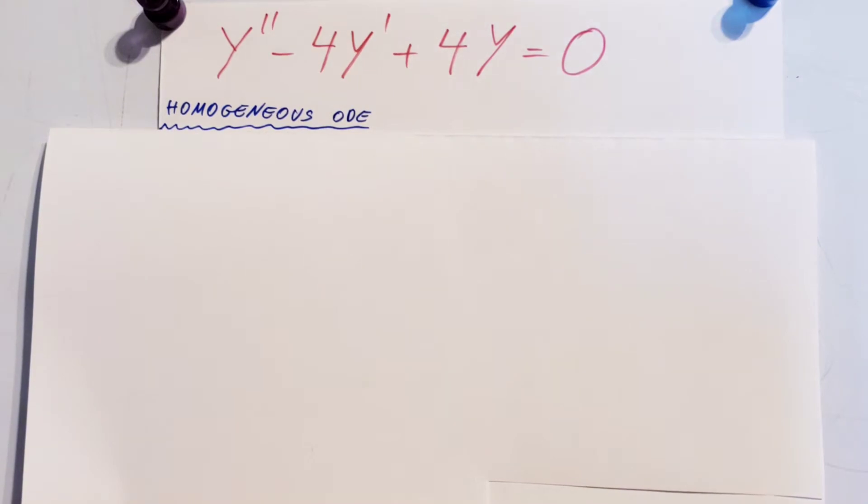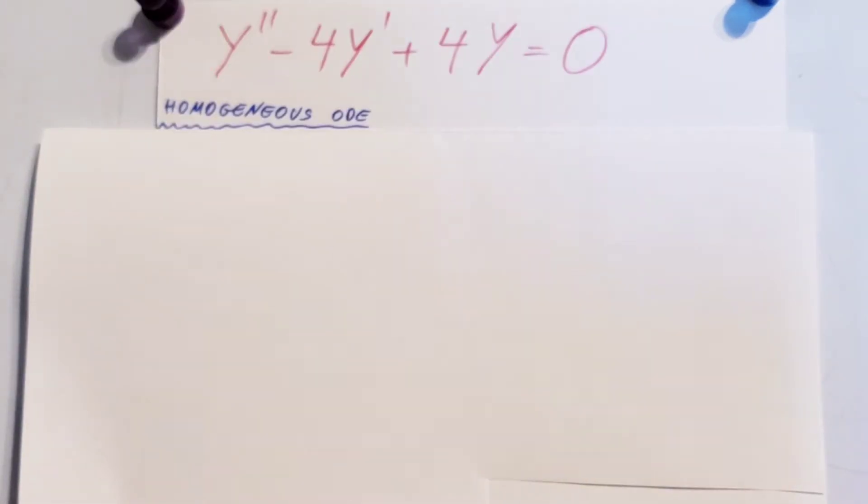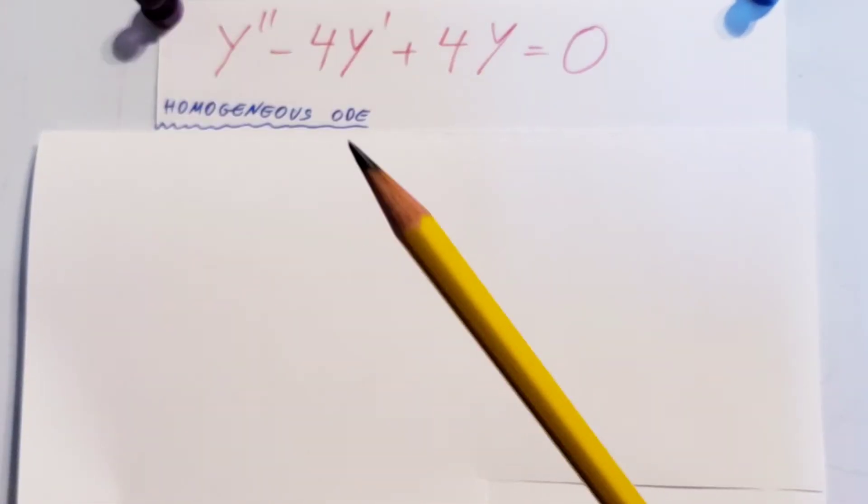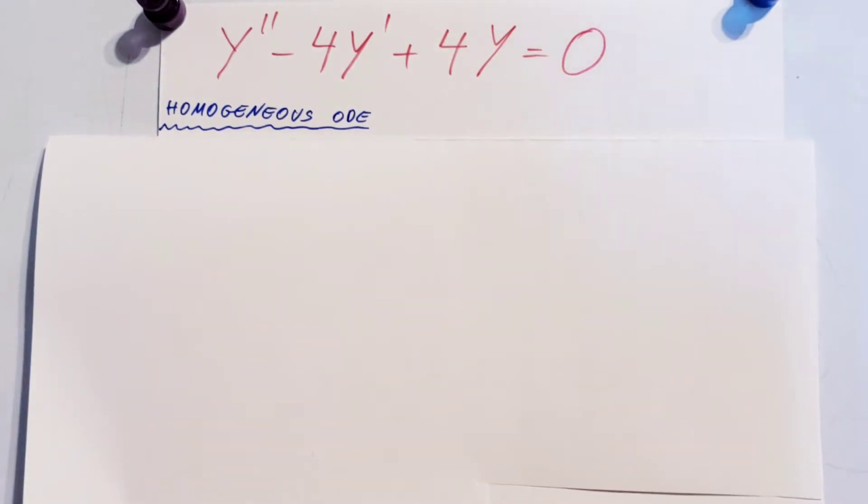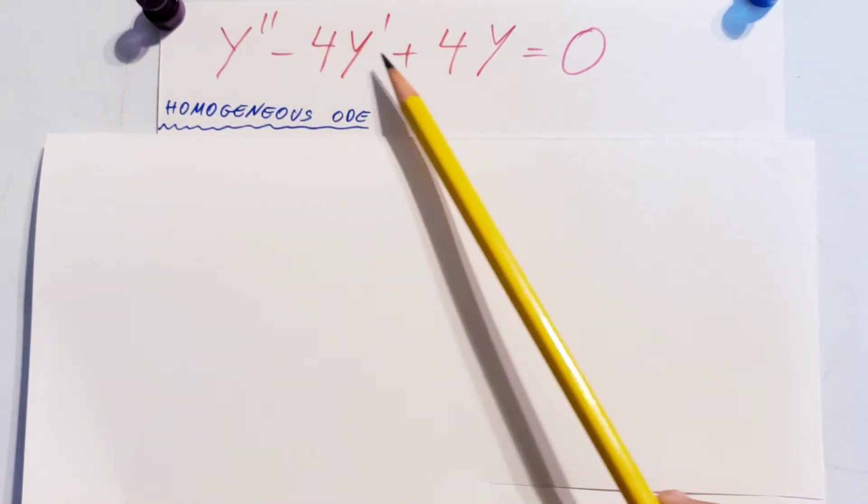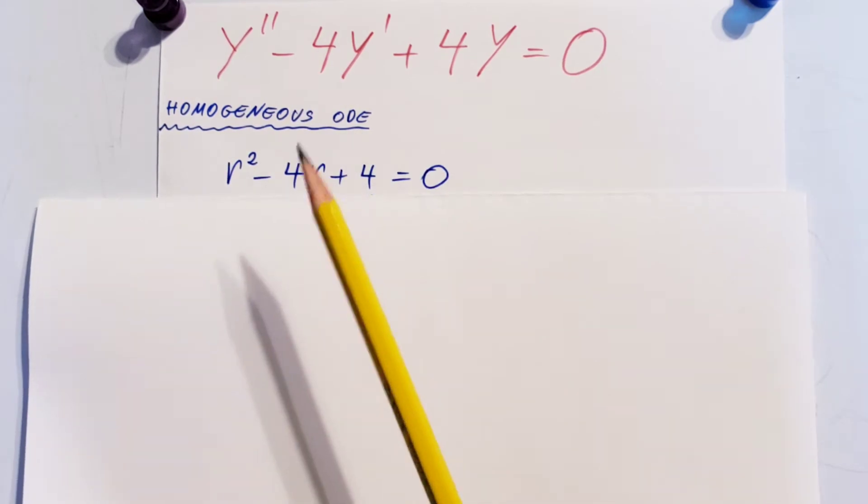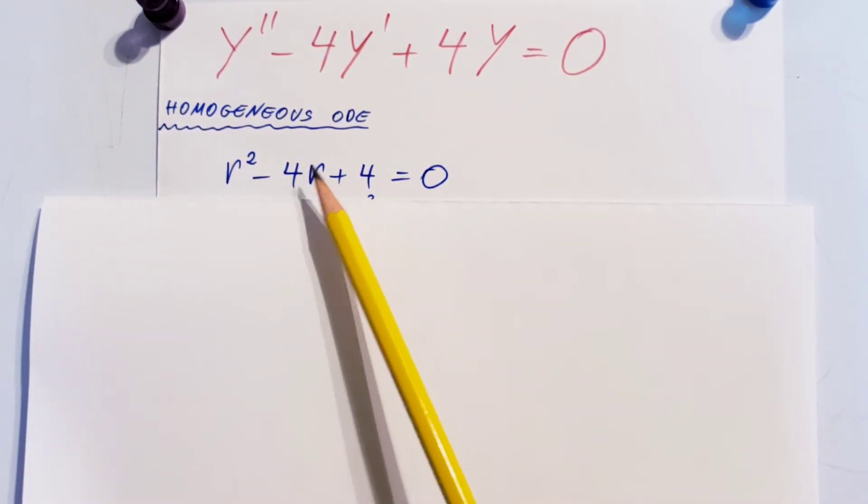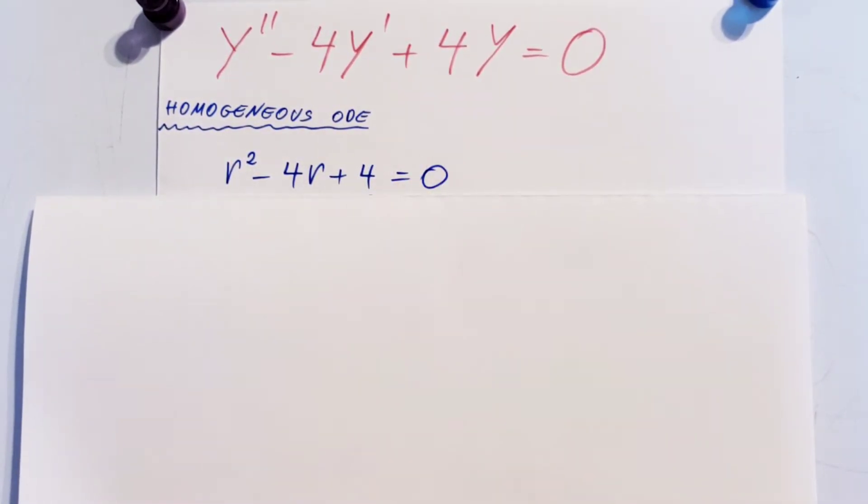This will be fairly fast and simple, but there's a trick I want to cover so nobody gets confused. Let's write the characteristic equation: r² - 4r + 4 = 0.